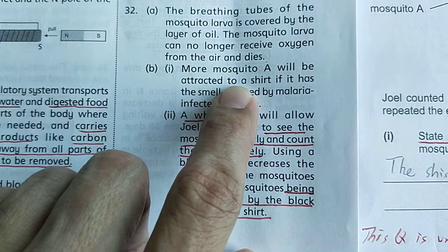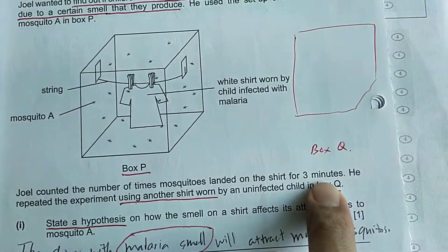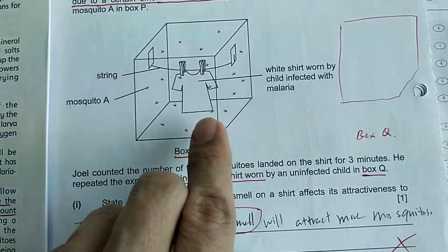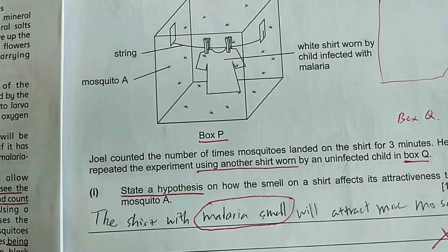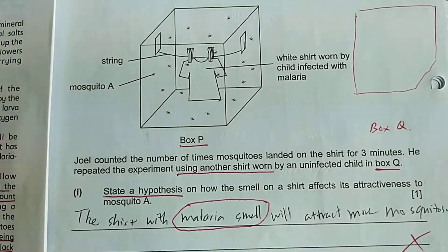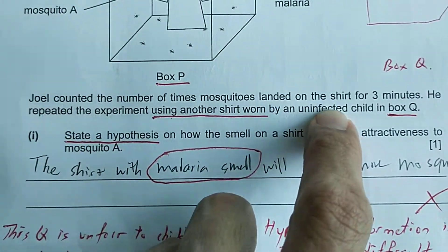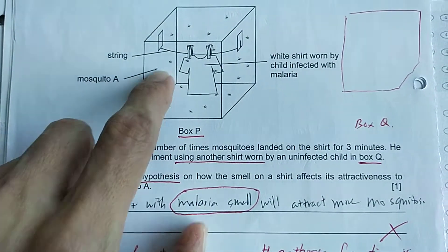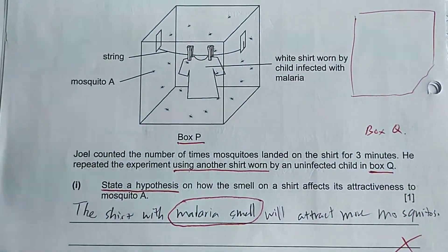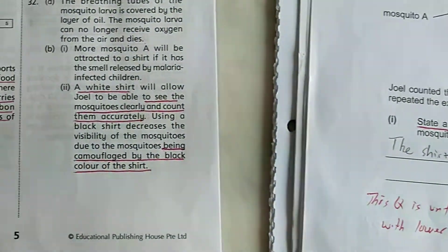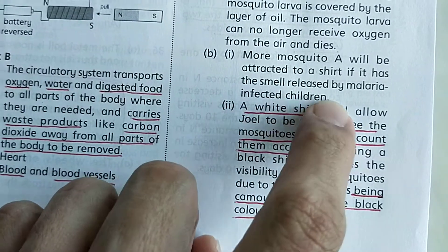More mosquito A will be attracted to a shirt if it has the smell released by malaria-infected children. That means in box Q — which the publisher did not print — there will also be a white shirt and 20 mosquitoes, but the shirt doesn't have the smell of children who are infected. For example, in box P, the mosquito may have landed 50 times in 3 minutes, while in box Q only 10 times. This expected result is the hypothesis.